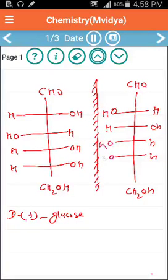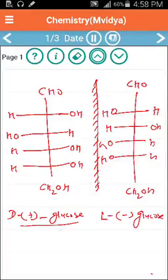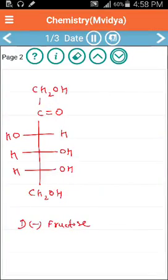This is H, this is again OH, and OH exactly opposite to the previous structure. So this is D-plus glucose, now it will change to L-minus glucose. This is the mirror image of D-plus glucose.